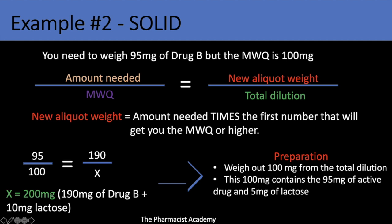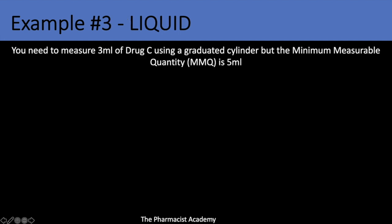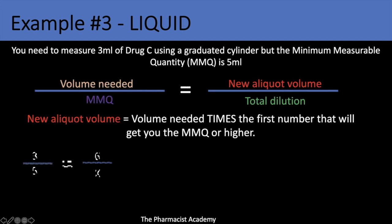Example number three follows the same concept. You need to measure 3 ml of drug C using a graduated cylinder, but the minimum measurable quantity is 5 ml. So 3 over 5 equals 6 over x — I got 6 because I used a multiplier of 2, so 3 times 2 is 6.